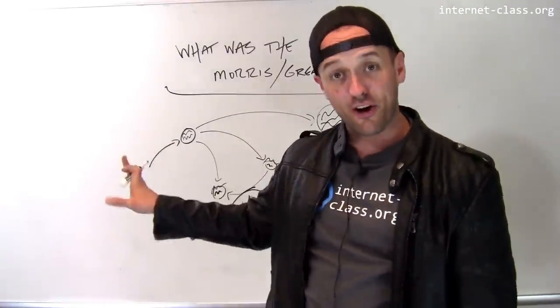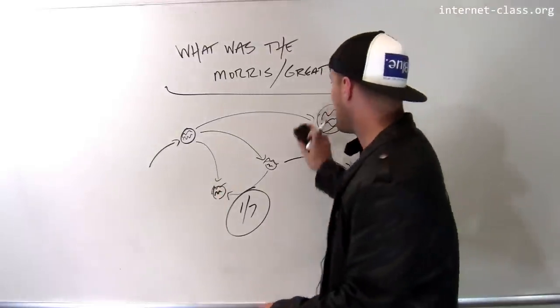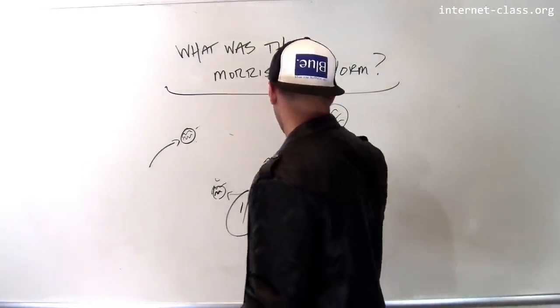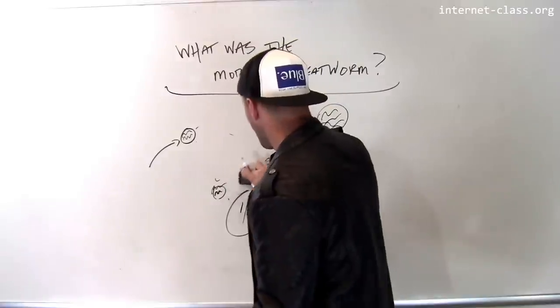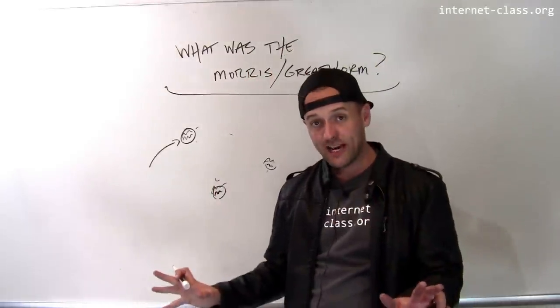And so in order to solve this problem, what the people who ran the internet had to do was they had to disconnect every computer from the internet. In fact, this was a coordinated operation by everybody who ran computer networks that were part of the internet. They had to all be shut down.